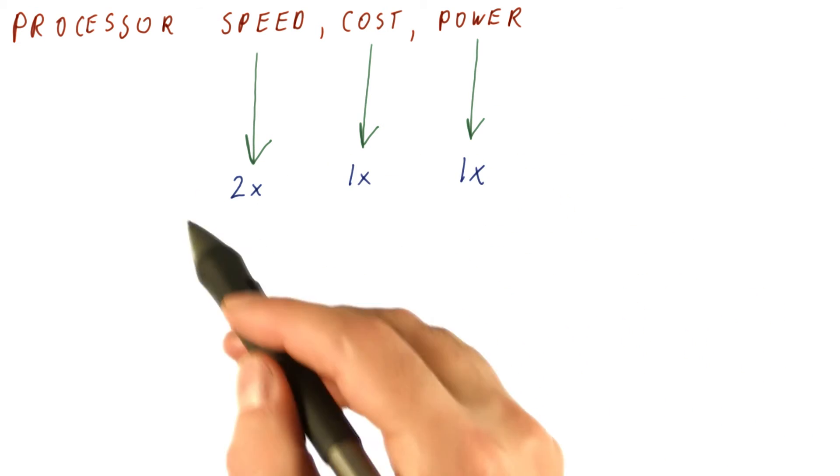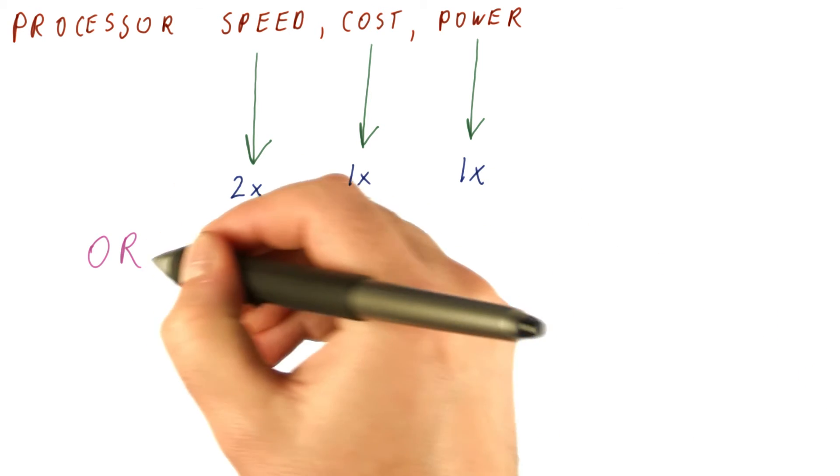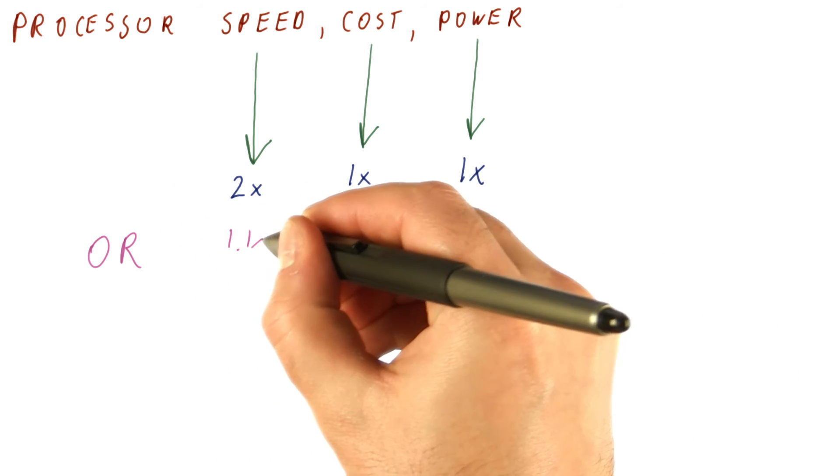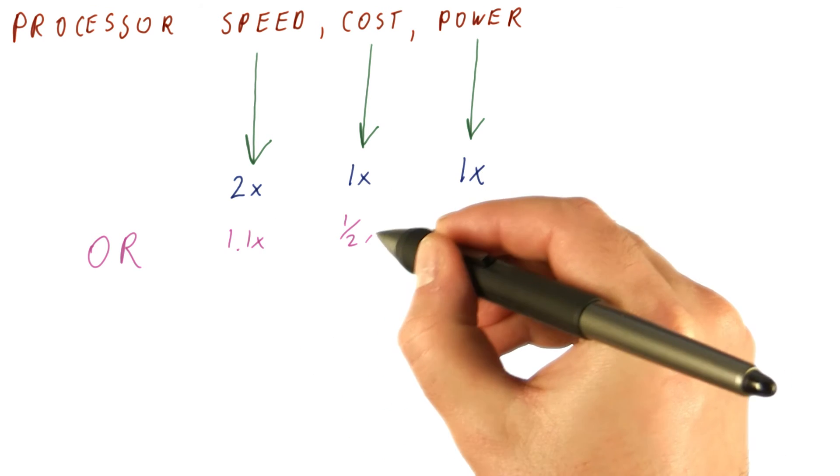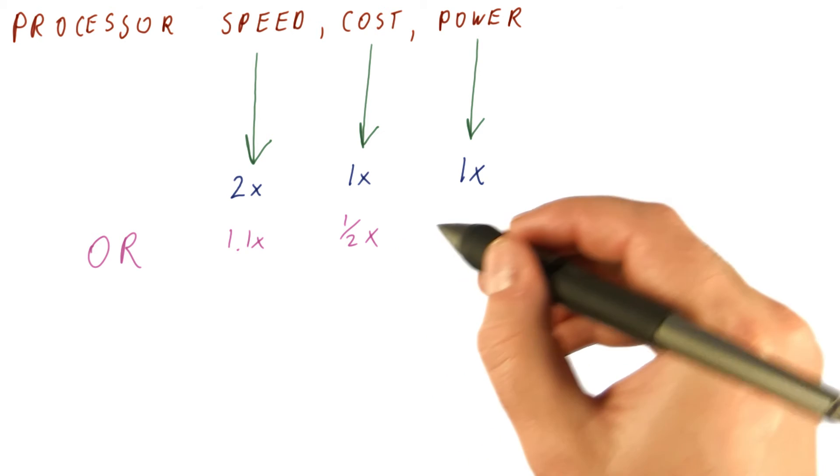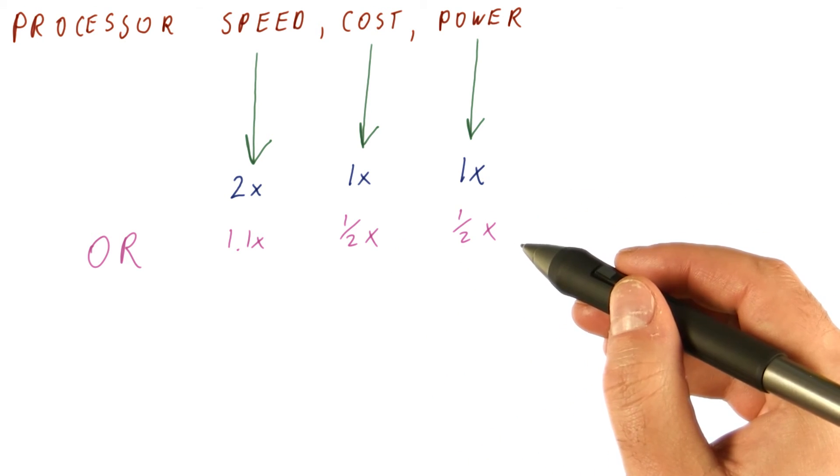But we don't have to use technology improvement to get this. We can get instead a smaller improvement in speed, let's say 1.1x for about half the cost as the original processor, and let's say about half the power consumption of the original processor.